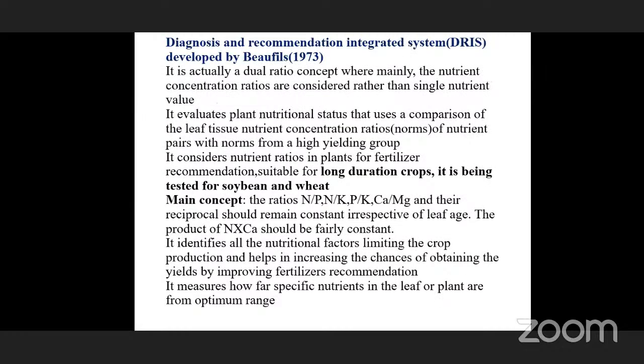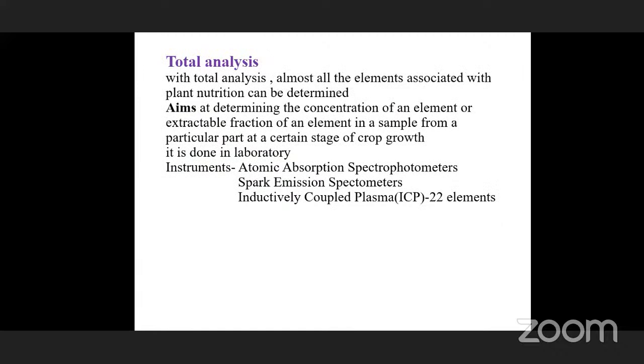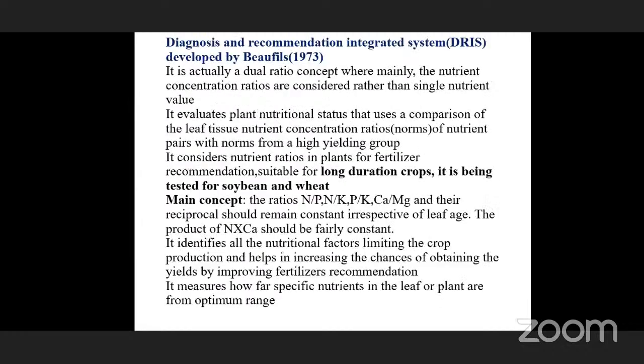The other method is DRIS, that is Diagnosis and Recommendation Integrated System. It was developed by Beaufils in 1973. In tissue test, we determine only one element like N, P, or K. In total analysis using atomic absorption spectrometers, it may detect only phosphorus or micronutrients. Inductively coupled plasma determines 22 elements separately. Whereas in DRIS, it is a dual ratio concept — nutrient ratios are considered rather than single nutrient values.